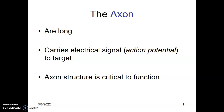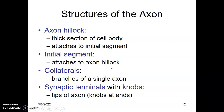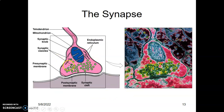The axon is usually long and is the transmitting portion that carries an electrical signal in the form of an action potential to the target. The axon hillock is the thick section of the cell body that attaches to the initial segment of the axon. From there you have collaterals, which are branches of a single axon, and at the end of the axon you have the synaptic terminal containing knobs — the tips of the axon — with a presynaptic membrane and a postsynaptic membrane separated by a synaptic cleft.